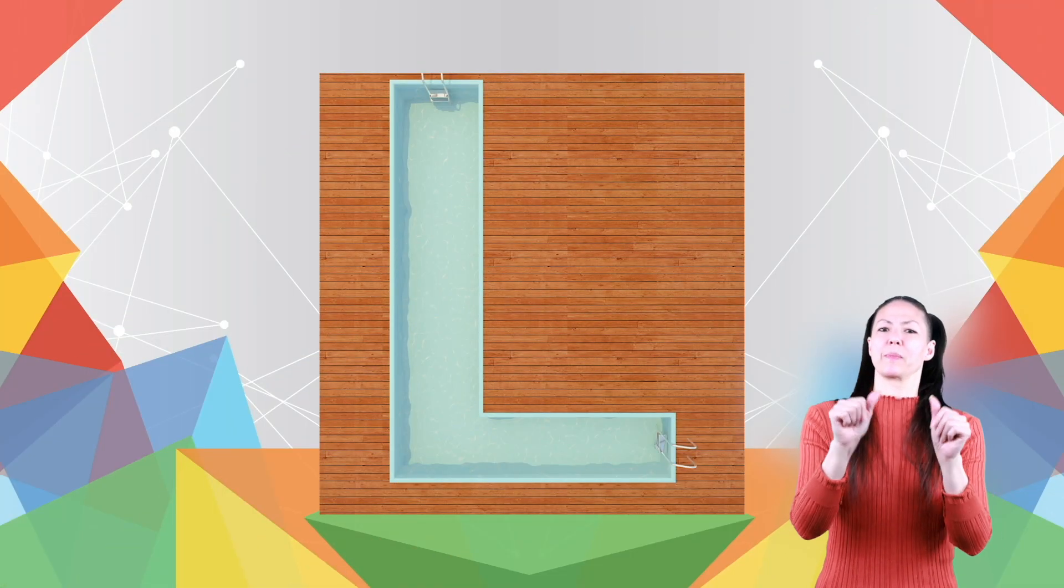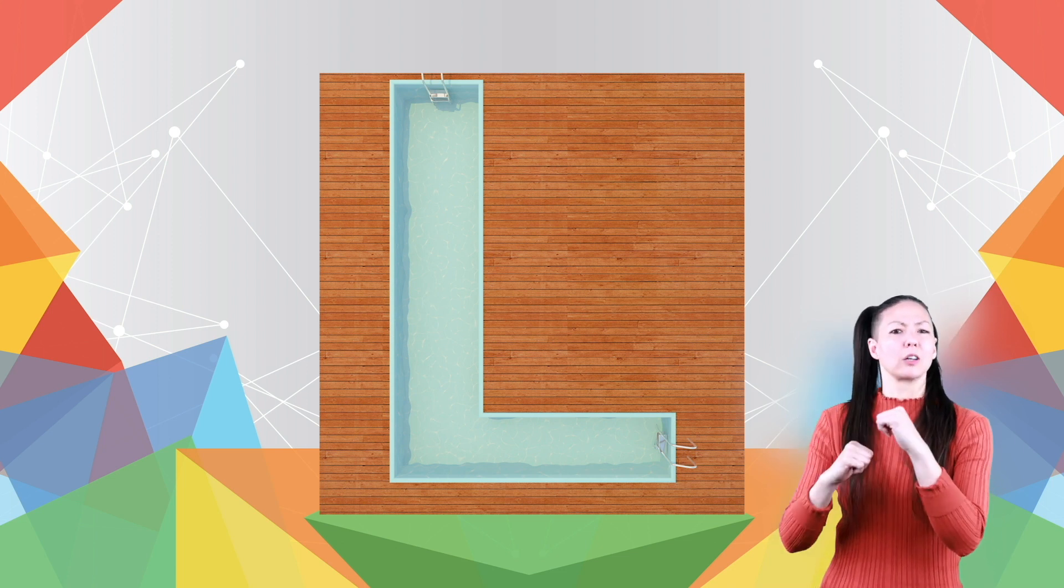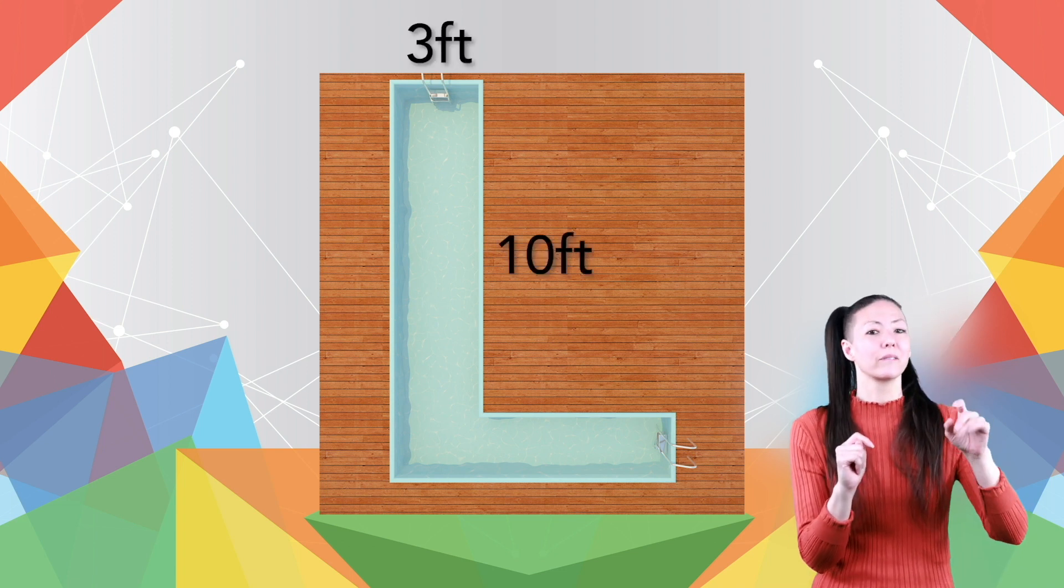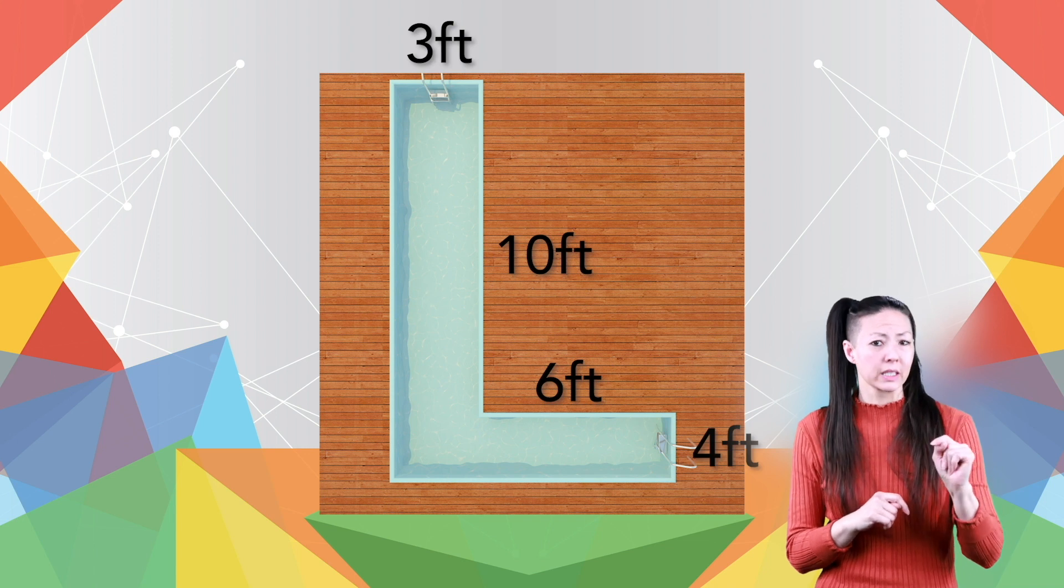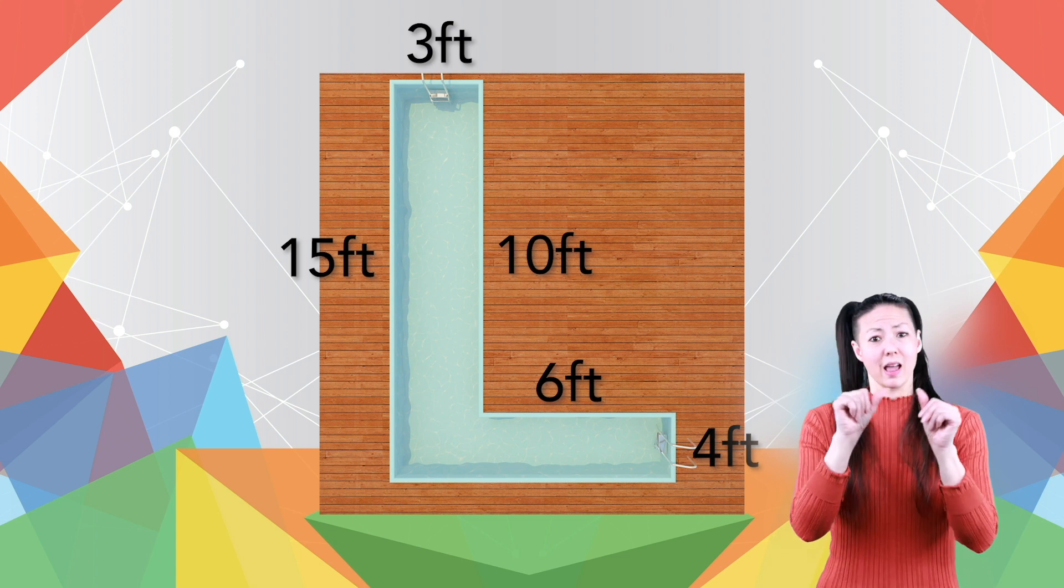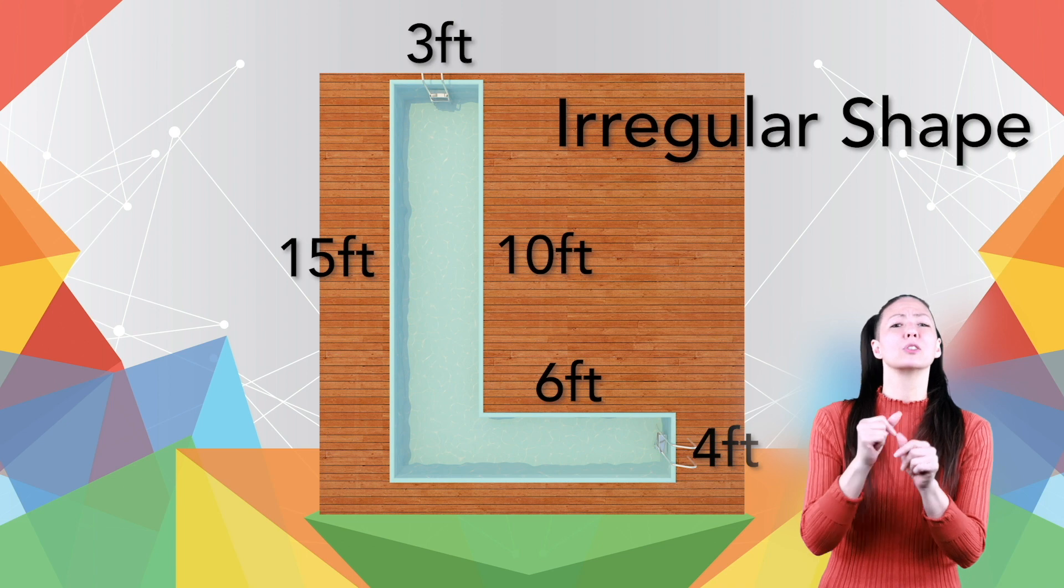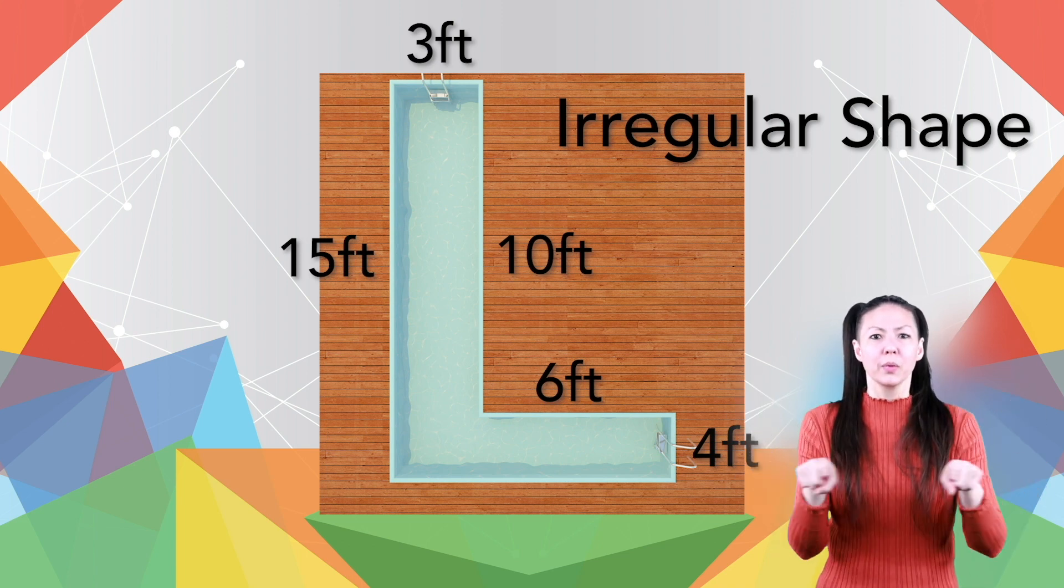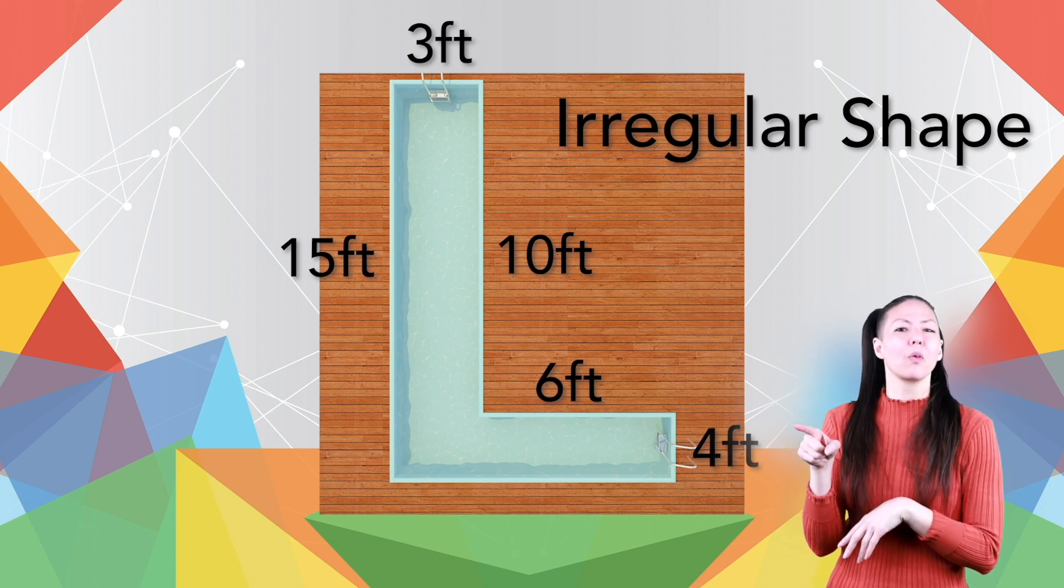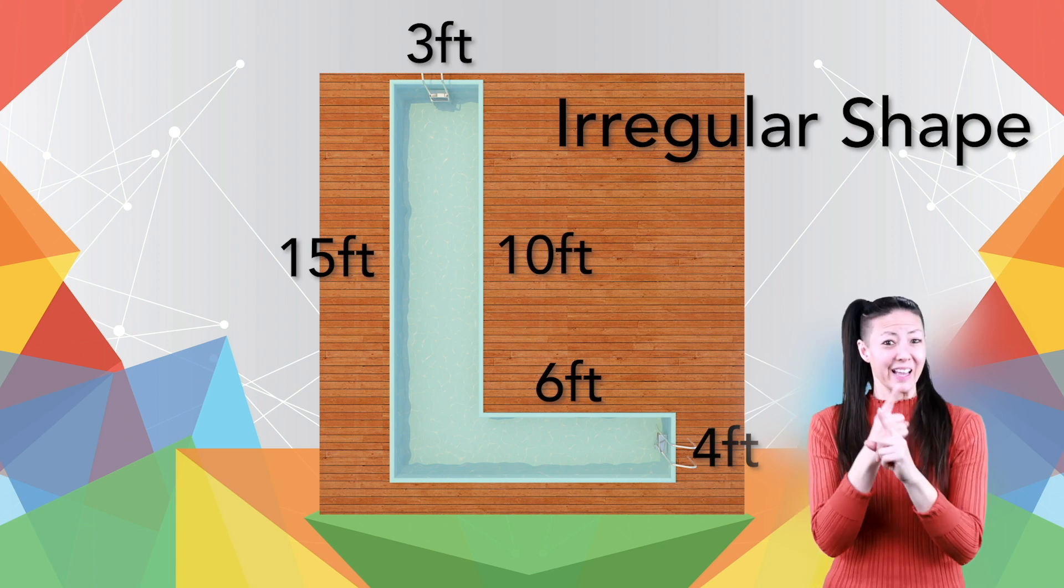Let's say you want someone to build an L-shaped swimming pool in your backyard. You would need to know the area of the pool to tell the construction crew. If the pool looked like this, with sides of 3 feet, 10 feet, 6 feet, 4 feet, and 15 feet, what would the area be? This kind of shape is called an irregular shape. In general, regular shapes are like squares or rectangles. Irregular shapes are made by combining different shapes. Our swimming pool, for example, has more than one shape. First, look at the shape. What two shapes do you see that make the swimming pool an L shape?